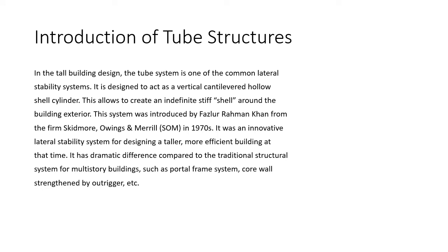Introduction to tube structures. In tall building design, the tube system is one of the common lateral stability systems. It is designed to act as a vertical cantilever hollow shell cylinder, which allows creation of an indefinitely stiff shell around the building exterior. The system was introduced by Fazlur Rahman Khan from the firm Skidmore, Owings and Merrill in the 1970s.